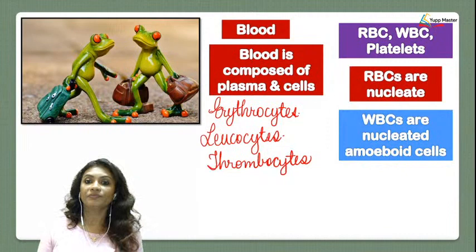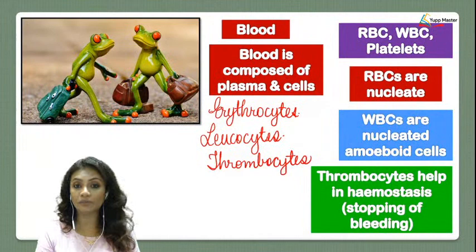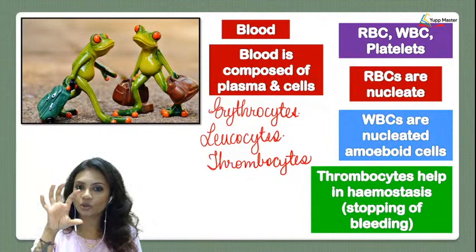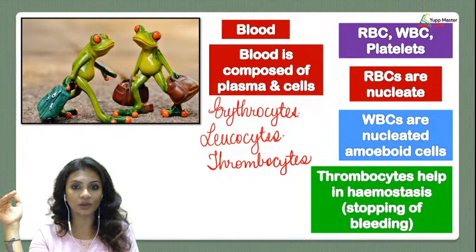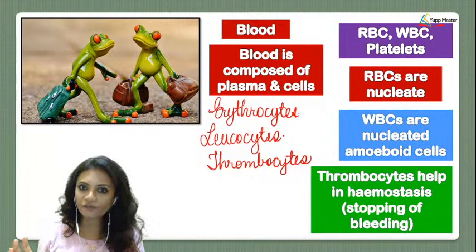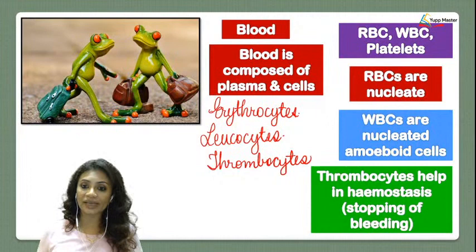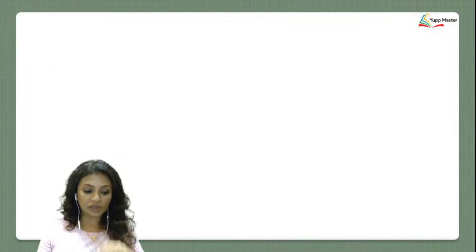Thrombocytes — the platelets in frogs — play an important role in hemostasis, meaning stopping of blood from excess bleeding. Heme means blood, stasis means to stop. Just like in humans, whenever there is injury, a clot is formed with the help of platelets. So thrombocytes help in hemostasis, i.e., stopping of bleeding.